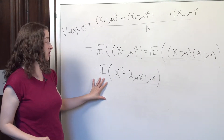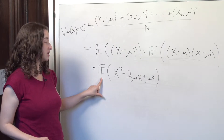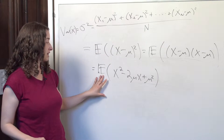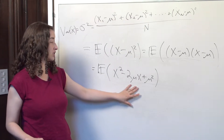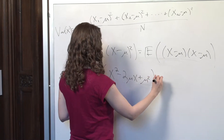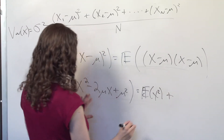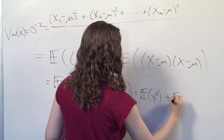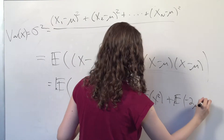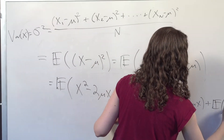I'm going to take advantage of the linearity property of the expectation in order to investigate this quantity. The expected value of x squared minus 2 mu x plus mu squared is equal to the expected value of x squared, plus the expected value of negative 2 mu x, plus the expected value of mu squared.